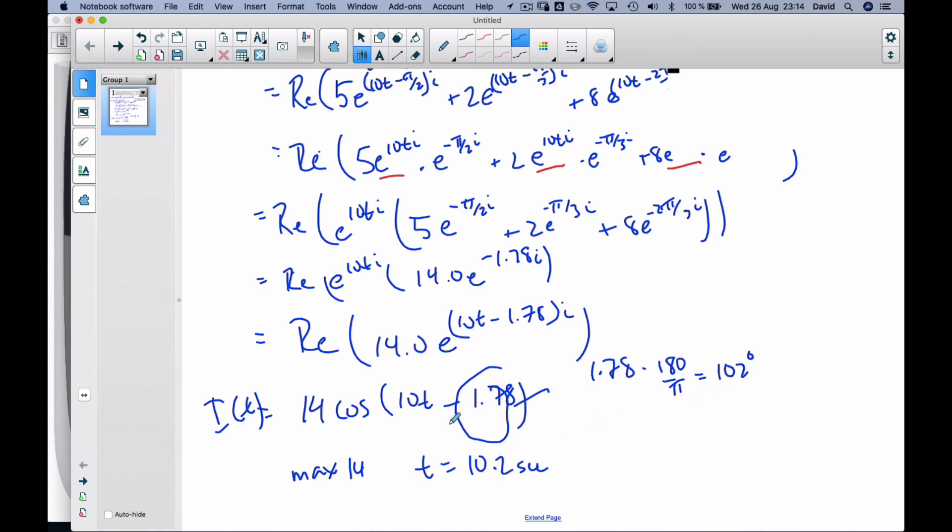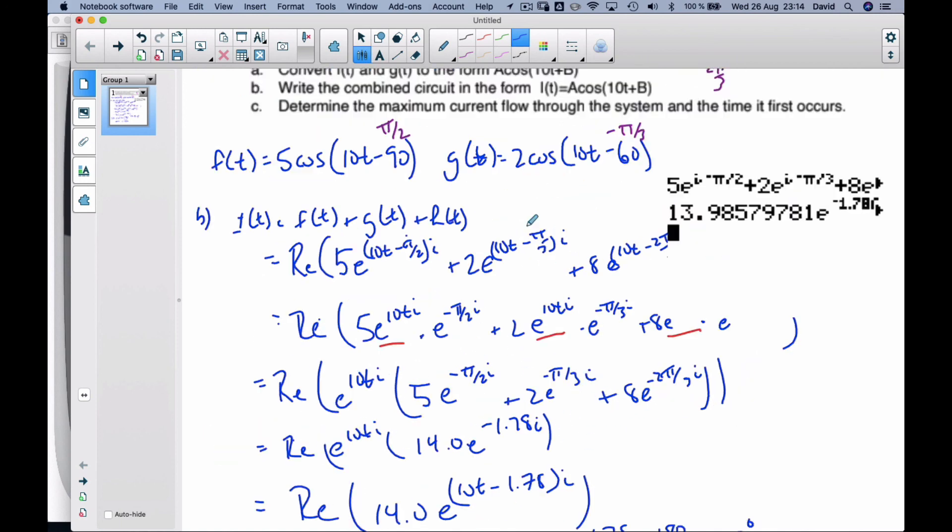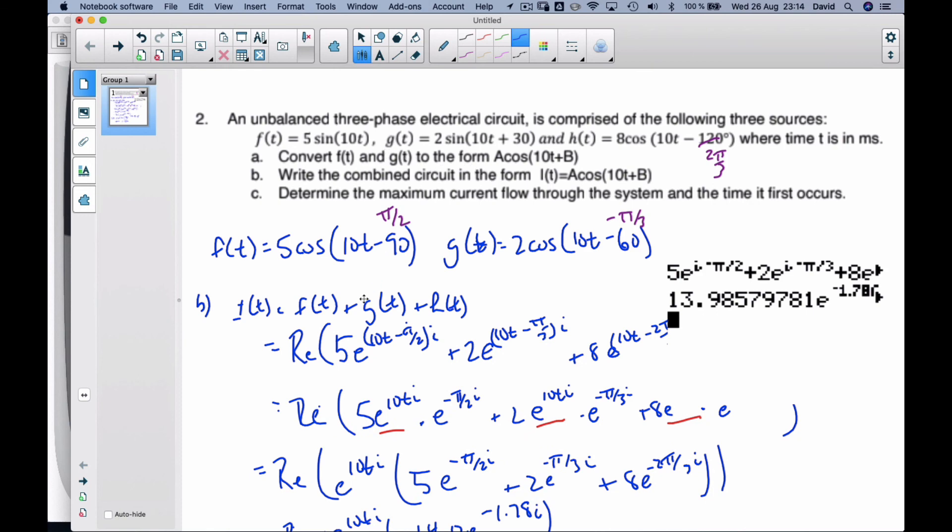And that's why 10.2 comes from the 102 degrees. And so there we go, using complex numbers to find a combination of cosine functions.